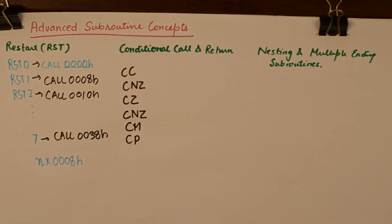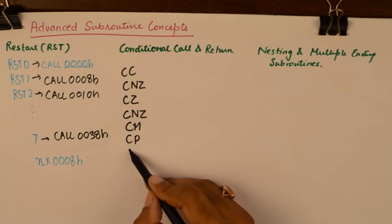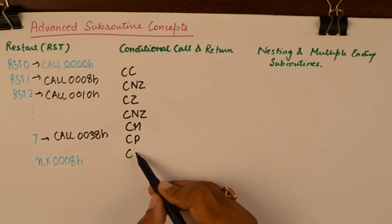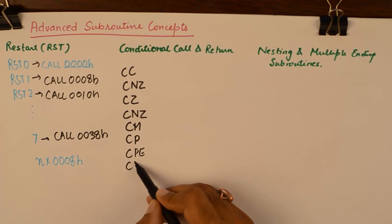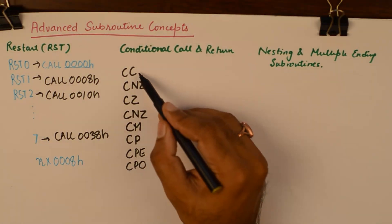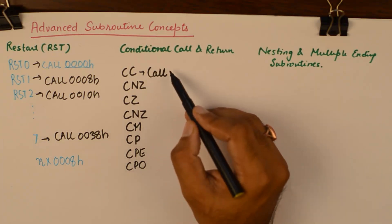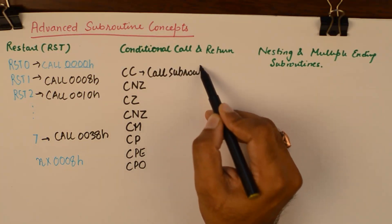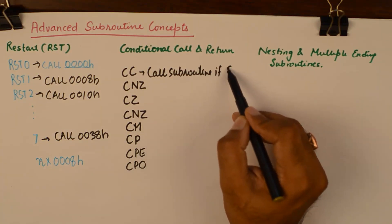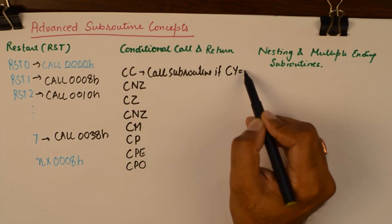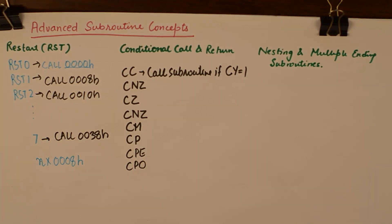The first in the conditional call list is CC, which means call the subroutine if the carry flag is set to 1. A normal call instruction will take the execution of the microprocessor to the address. With all these instructions you need to specify the address where the subroutine is located.